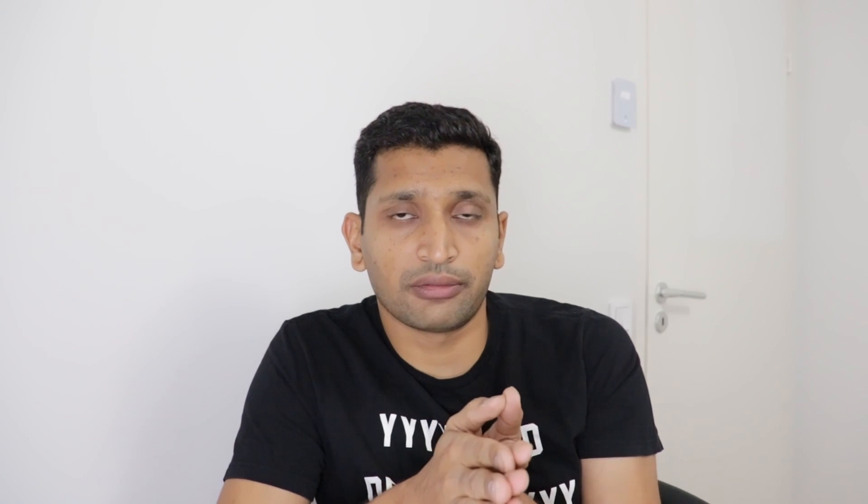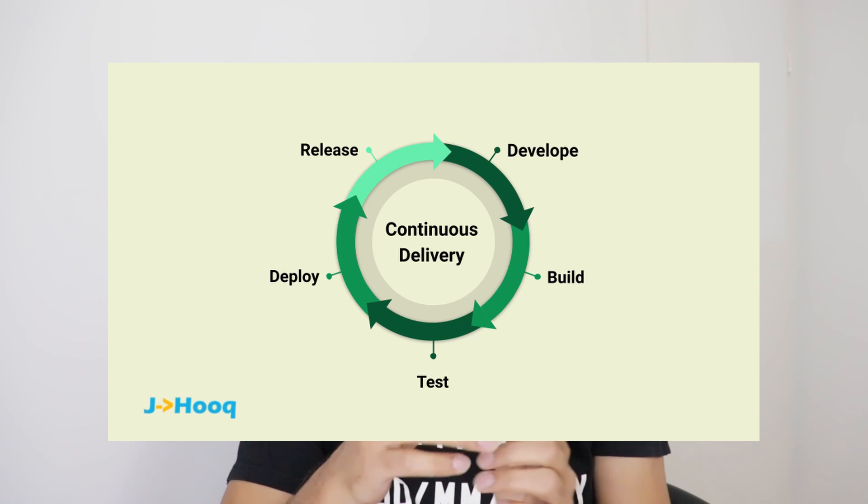That will be your second step after GitHub. Now, the continuous delivery concept is very popular in DevOps because you have to deliver code continuously. There are two components involved: Git, from where you fetch the code, and Jenkins, which deploys that code. This creates a continuous environment where developers don't have to do anything manually — Jenkins takes care of deployment, test execution, and preparing the final release build.